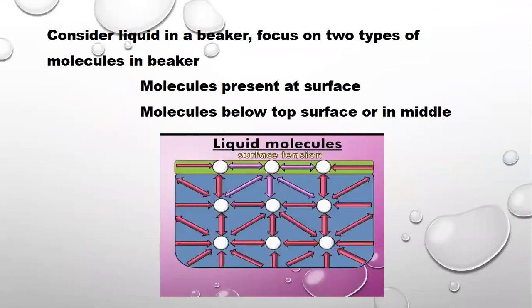First of all, we consider a liquid molecule placed in a beaker. We focus on two types of molecules present in the beaker. As you can see, this is a beaker in which water molecules are present. These white circles denote water molecules. There are two types of water molecules — one at the surface and other molecules which are present below the top surface or in the middle. We consider the molecules which are below the top surface.